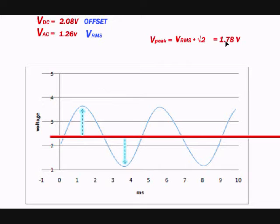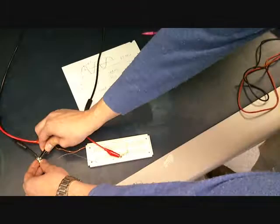Since we know it's a sine wave, we do this by the following formula: 1.26 times square root of 2 equals 1.78. What we expect on our oscilloscope is our DC offset equal to 2.08 volts and our amplitude from the DC offset equal to 1.78 volts, which is peak measurement.